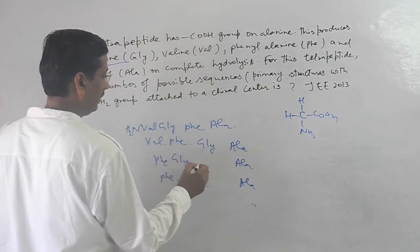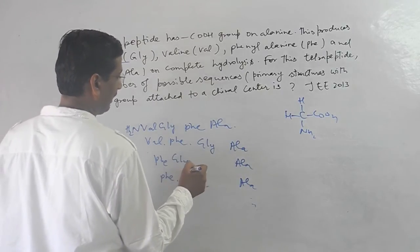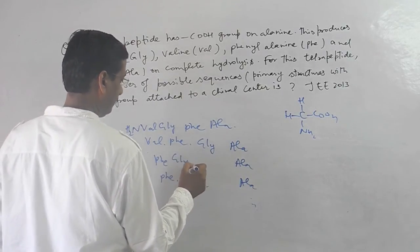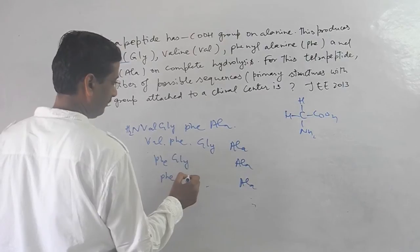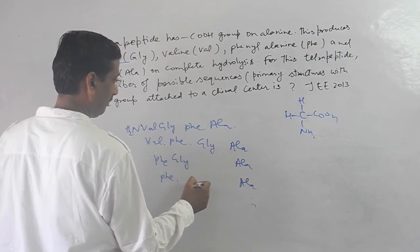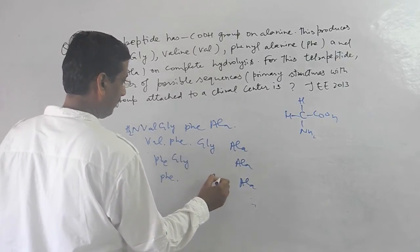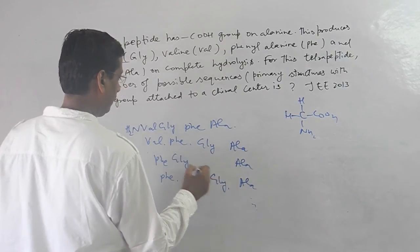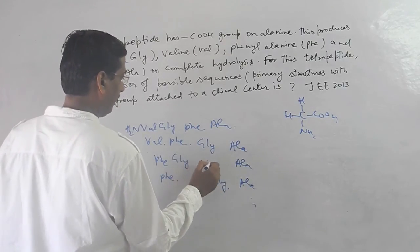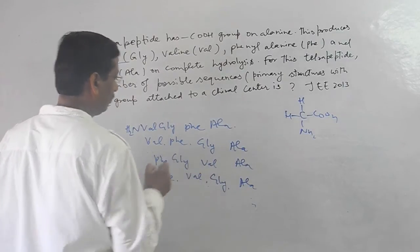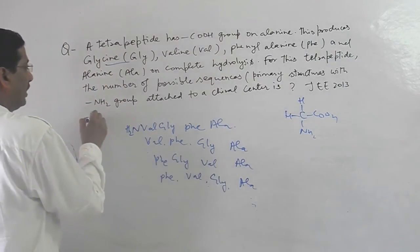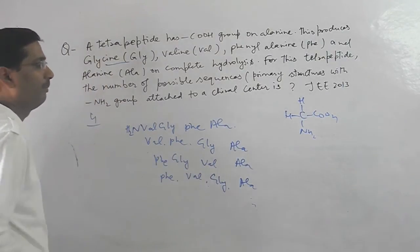Glycine is placed here, and here we have a variable, and here we have another variable. This gives a total of 4 combinations.